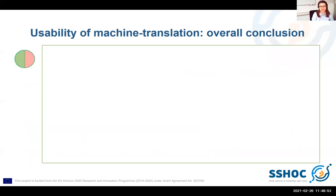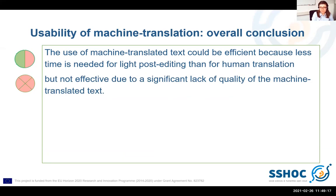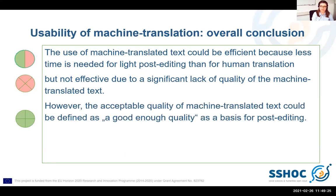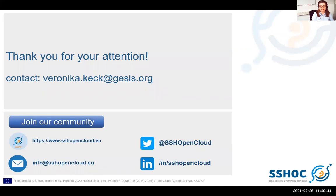The overall conclusion for the three dimensions of usability — effectiveness, efficiency and satisfaction — is as follows. The use of machine translated text could be efficient because less time is needed for light post-editing than for human translation. But it is not effective due to a significant lack of quality of the machine translated text. However, the acceptable quality of machine translated text could be defined as 'good enough' quality as a basis for post-editing. Overall, satisfaction with machine translation and the post-editing task was rather positive and even increased with project experience. Thank you very much for your attention. I look forward to the further discussion.